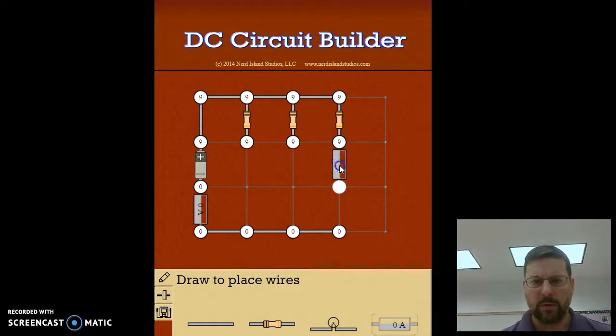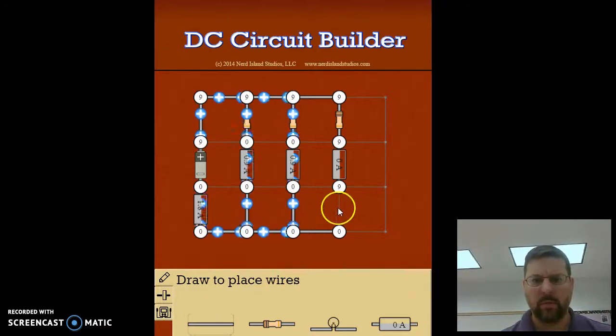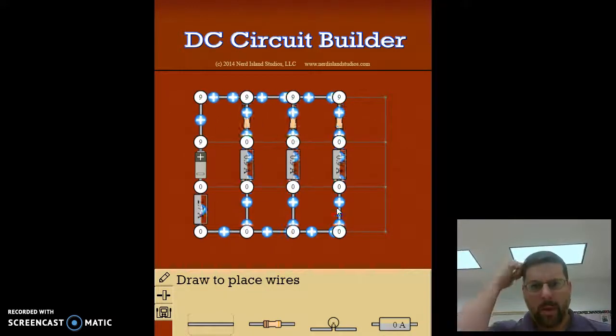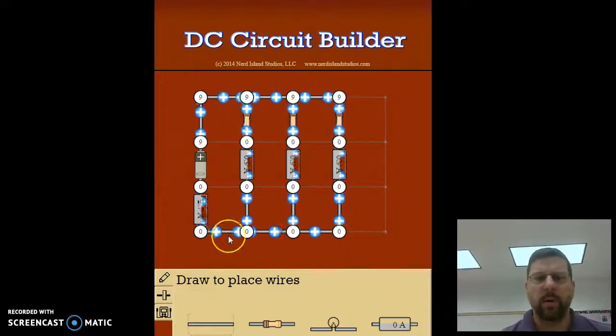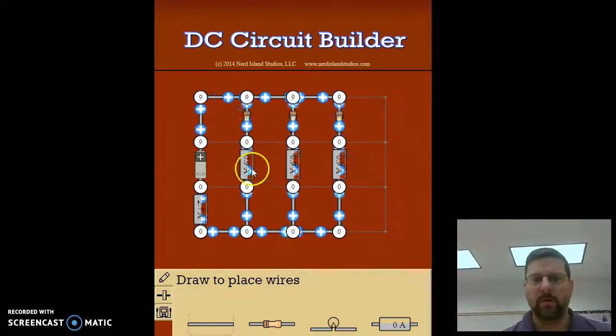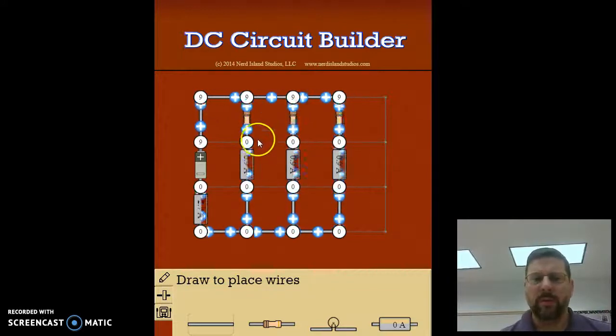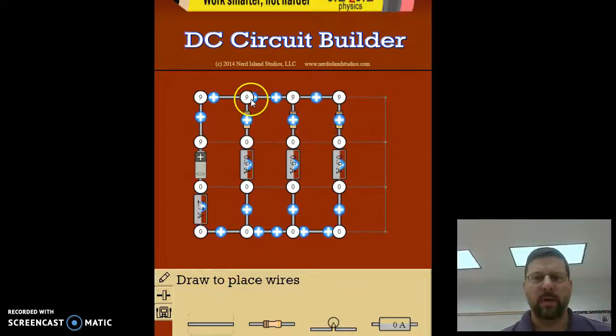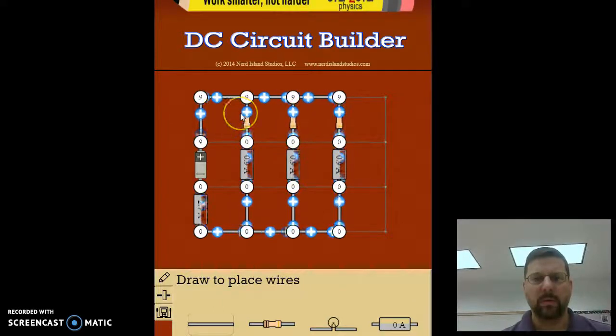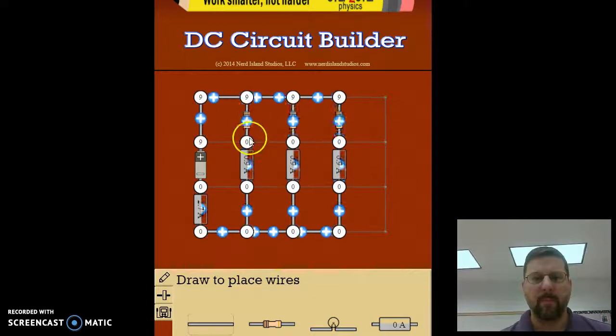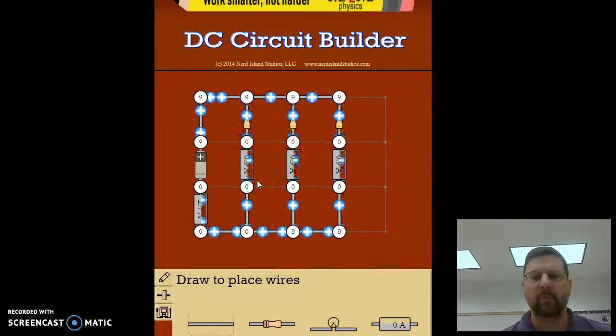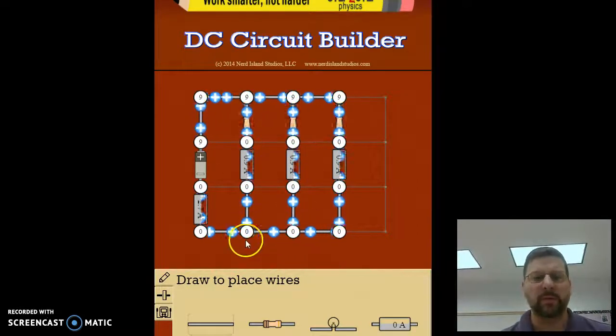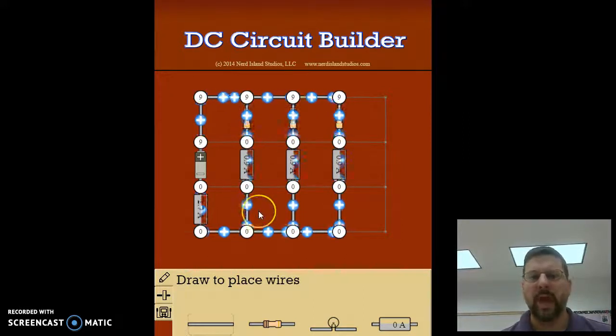And then we want to measure the current going through each of the branches. And so you can see why this is called a parallel circuit, because what you end up with is parallel branches. The circuit forks and you end up with a couple of different conductive paths that all run parallel to each other.